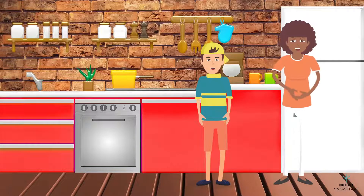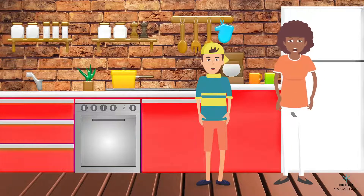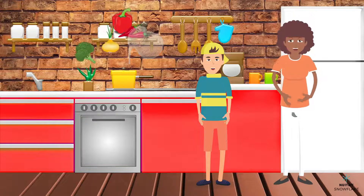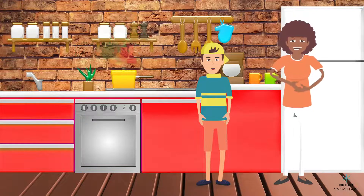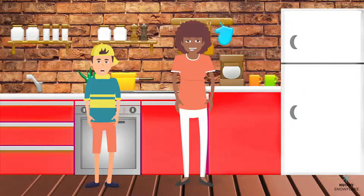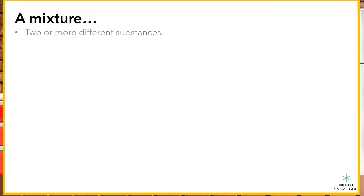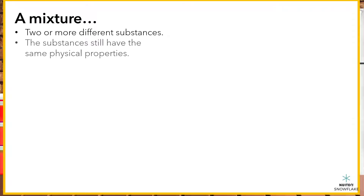Well, often when we cook, we take ingredients and combine them to form either a mixture or a solution. What is the difference between a mixture and a solution? A mixture is when we combine two or more different substances and no physical change happens to the substances. The substances still have the same physical properties and can often be separated.